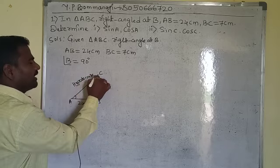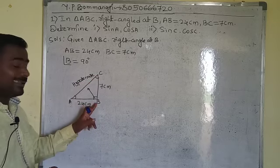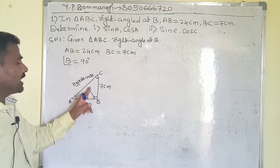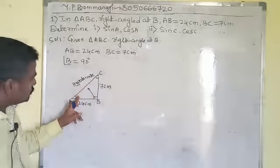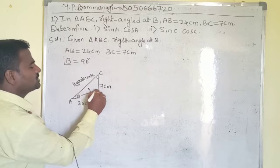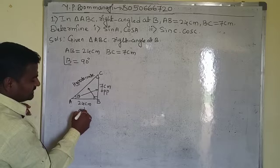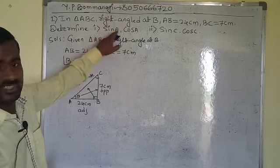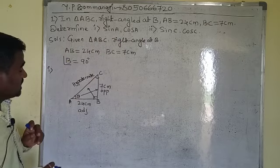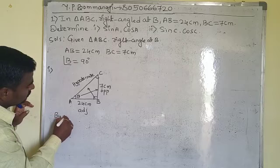In this right-angled triangle, the two acute angles are at A and at C, while the right angle is exactly 90 degrees at B. Whenever we take theta at angle A, this side BC is the opposite side and AB is the adjacent side. Similarly, we can express values for angle C using the Pythagorean theorem.